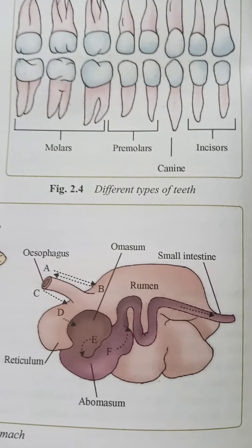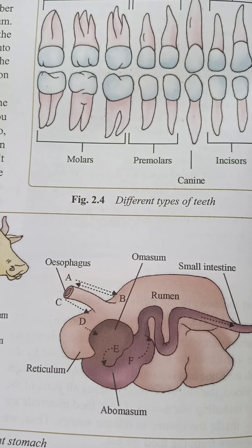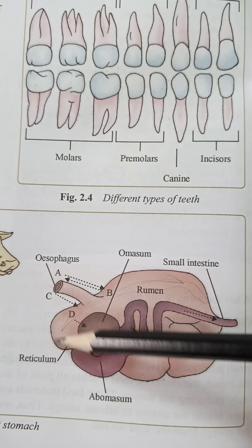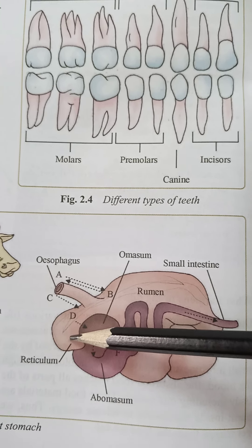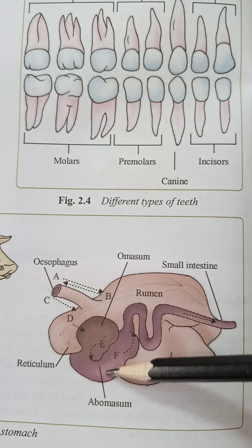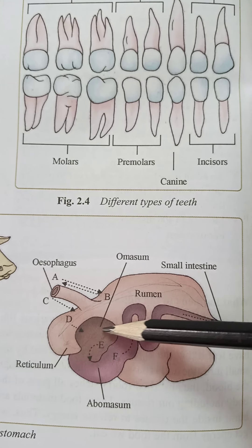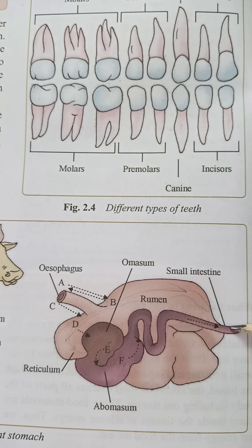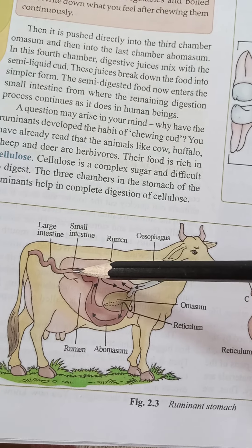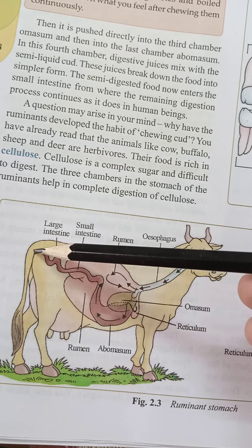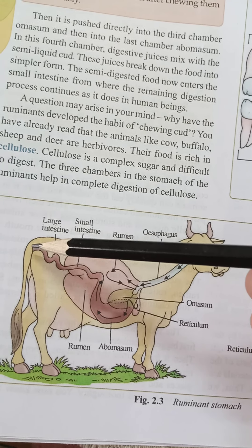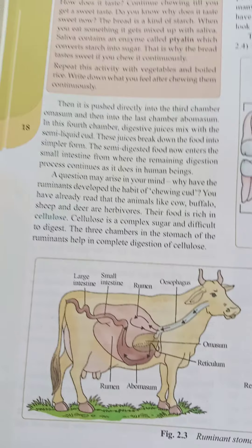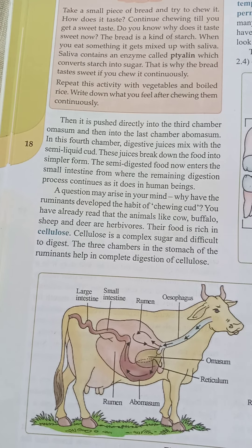یہ ruminant کا stomach ہے۔ اس figure سے دیکھیں — یہ سب سے بڑے chamber rumen میں آئے گا، اس کے بعد reticulum میں چلا جائے گا، پھر omasum میں آ جائے گا، اور then finally abomasum میں آ جائے گا۔ یہاں سے گھوم کر small intestine میں، اور پھر large intestine میں۔ Finally the last opening of the digestive system is the anus — جو extra یا undigested food ہوگا وہ اس کی body سے باہر آ جائے گا۔ I hope you understand it. Okay students, we will continue our next topic in my next video. Thank you and Allah Hafiz.